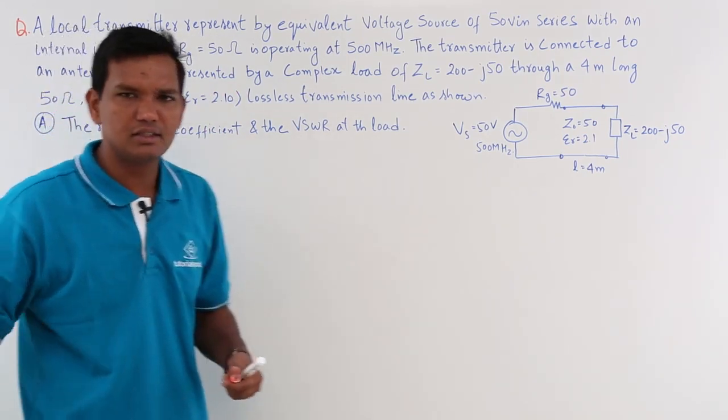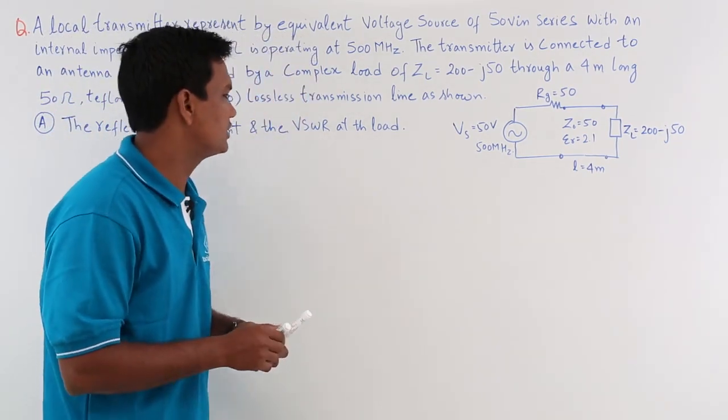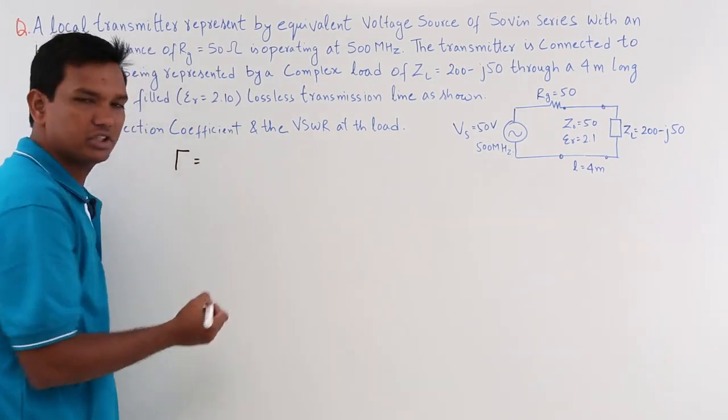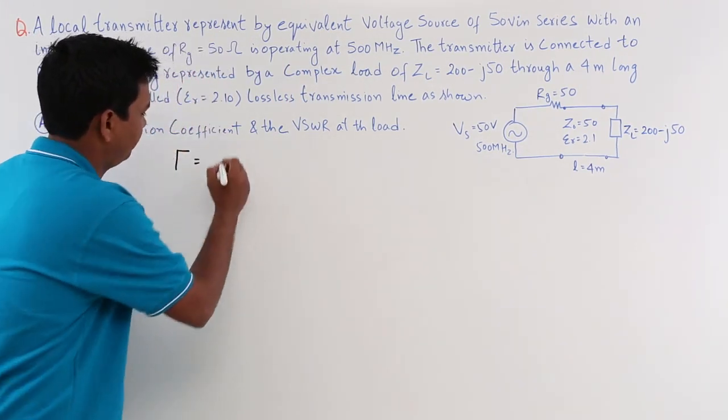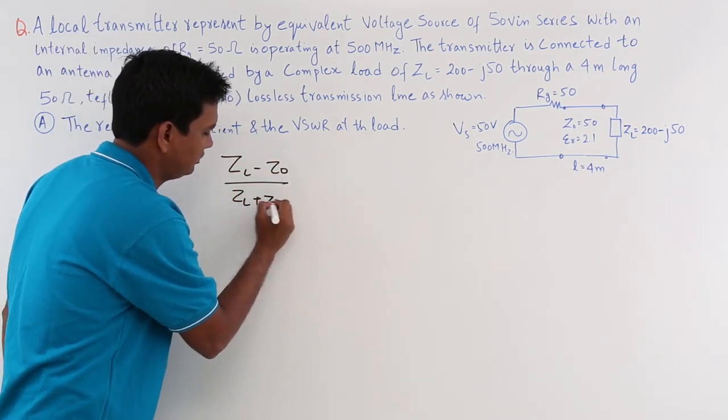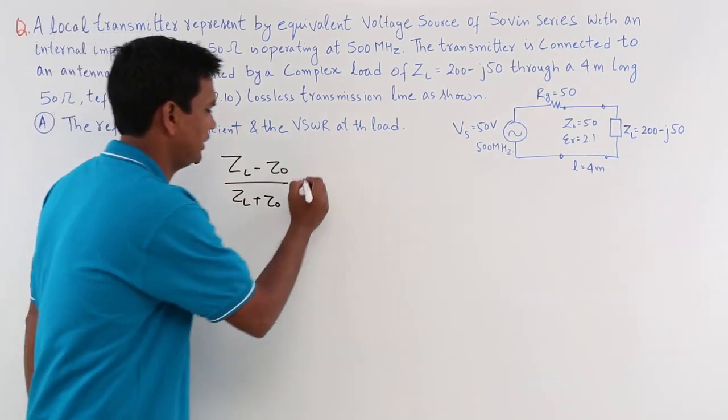Now, the first thing is we have to solve for the reflection coefficient. What do you know about reflection coefficient? It is ZL minus Z0 divided by ZL plus Z0. Everything is given here.